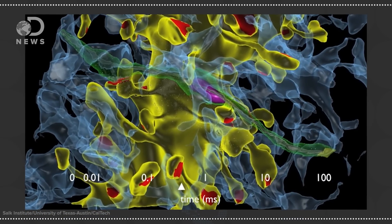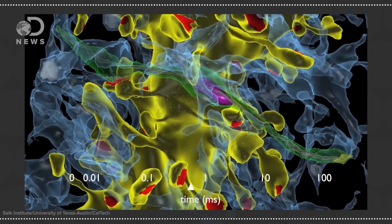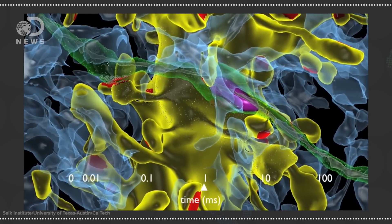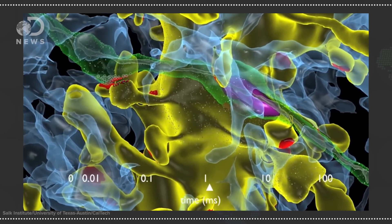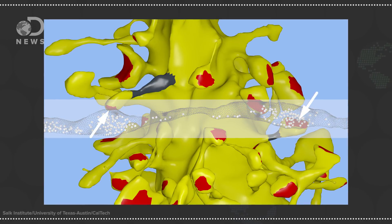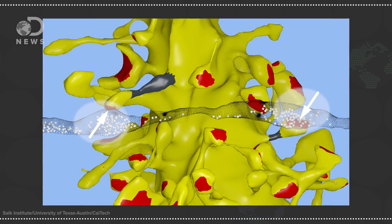To find out how, the Salk Institute used a 3D digital model of a rat's hippocampus and examined how synapse size affected brain capacity and efficiency. In doing so, they noticed something unusual. In 10 percent of cases, a single neuron had two synapses connected to the same neighboring neuron. They were sending two copies of the exact same message.